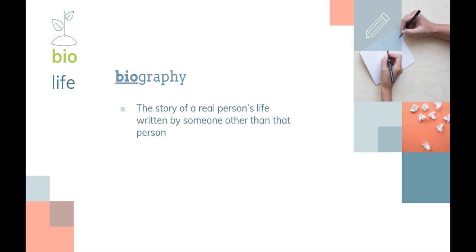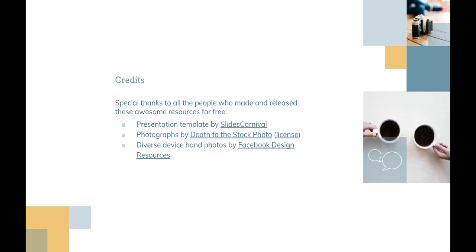Biography is the story of a real person's life written by someone other than that person. An autobiography is a book written about someone's life written by that person, while a biography is the story of someone's life written by someone else. On your homework, I want you to write the name of someone who you would want to read a biography about.